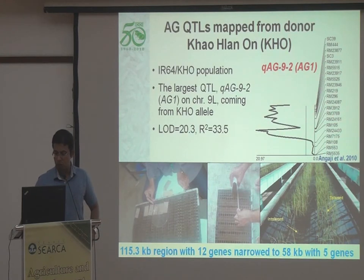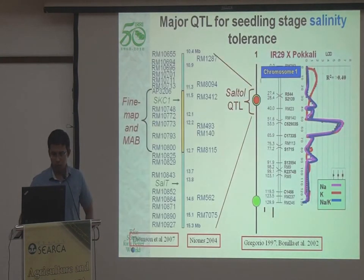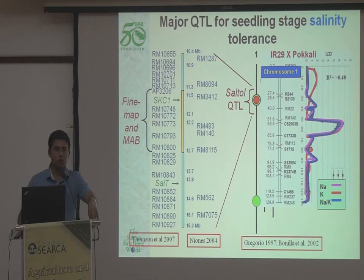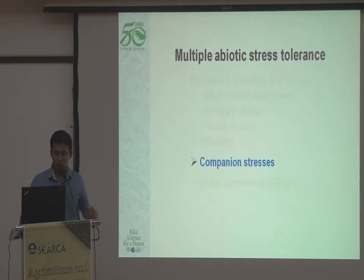Efforts are ongoing to identify QTLs and genes for seeding stage salinity tolerance, and similar efforts are underway to look for QTLs and genes for reproductive stage salinity tolerance as well.